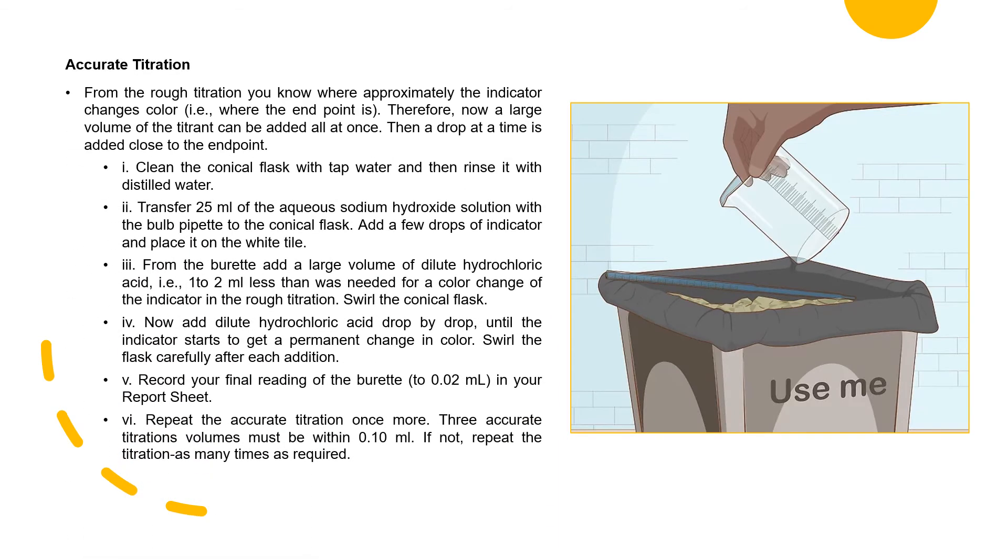For the accurate titration, from the rough titration, you know where approximately the indicator will change the color. Therefore, now a large volume of titrant can be added all at once and then a drop at a time is added close to the end point. Clean the conical flask with tap water and then rinse it with distilled water. Transfer 25 ml of aqueous sodium hydroxide solution with bulb pipette to the conical flask. Add a few drops of indicator and place it on the white tile. From the burette, add a large volume of dilute hydrochloric acid, e.g. 1-2 ml less than was needed for a color change of the indicator in rough titration. Then swirl the conical flask.